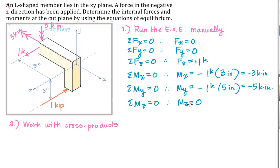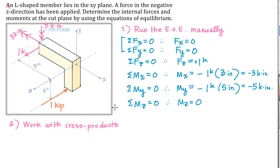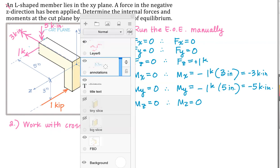This is the way that I would do this if left to my own devices — kind of run through the six equations of equilibrium in my head. As you're learning, it's a great idea to write all six down, but as you get more fluent with this, you can really focus on the three that are non-zero and just ignore the ones that are zero. That is one way to approach this.